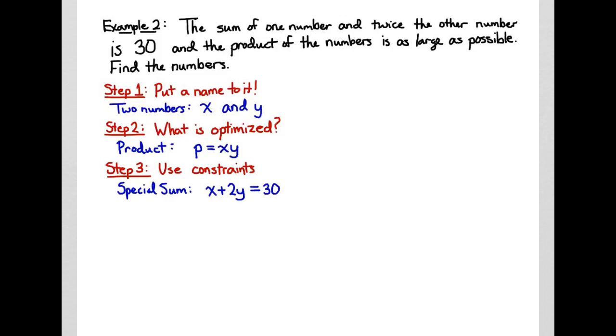Now we need to take advantage of the information, and we call this a constraint. Our constraint in this example is that the sum of one number (we'll call that x) and twice the other number (that's x plus 2y) equals the value 30. We call this a constraint because it allows us to solve for one of our variables. In this example, it'll be easiest to solve for x by subtracting 2y. So we solve for x: x equals 30 minus 2y.